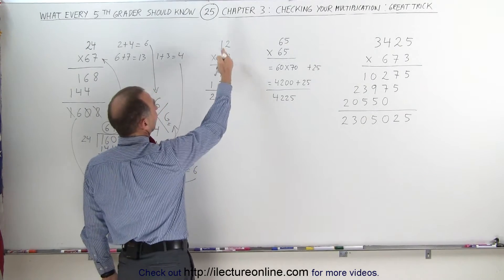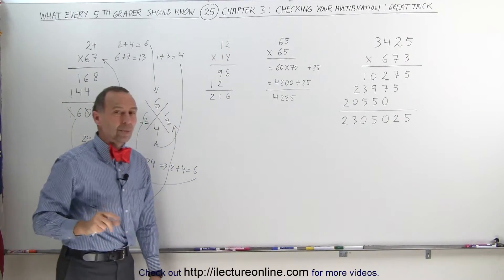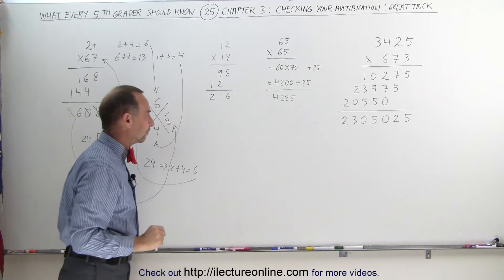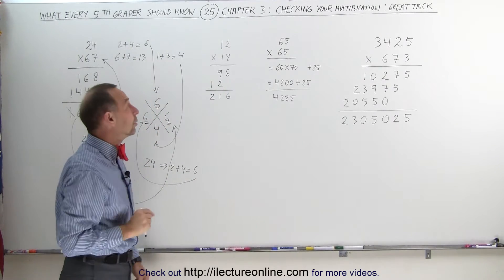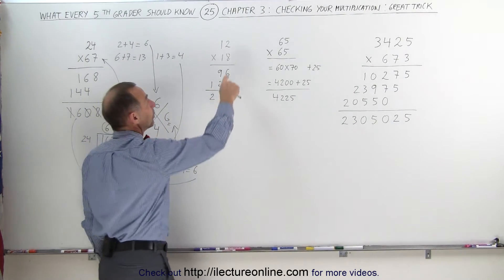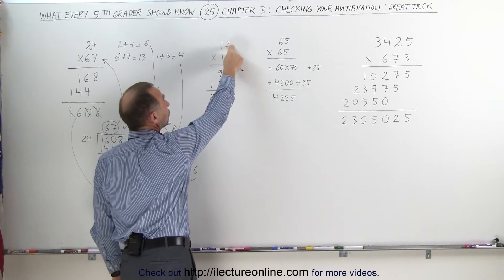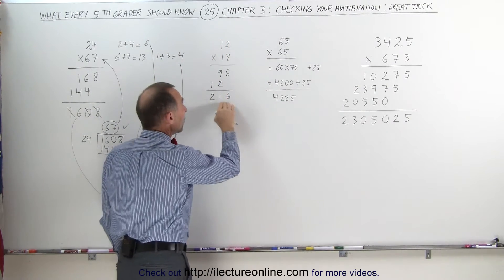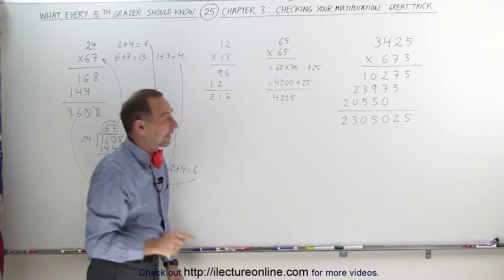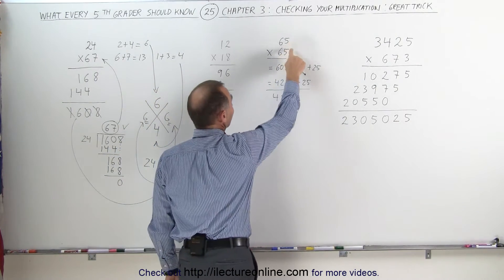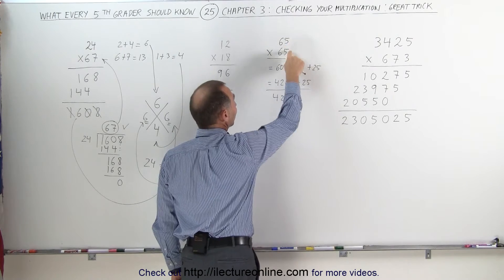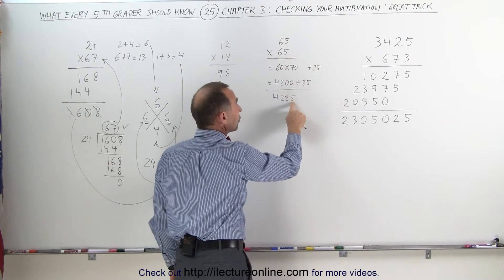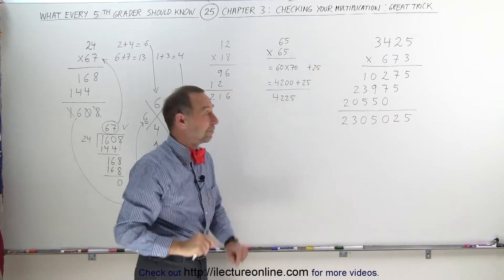So here, let's say we're multiplying 12 times 18, and we want to know if our answer 216 is correct. Well, one quick other way we can do is this. We can multiply the last two digits together, 2 times 8 is 16, that ends in a 6, your answer better end in a 6. Again, over here, you're multiplying 65 times 65, 5 times 5 is 25, which ends in a 5, your answer better end in a 5, or it's definitely not correct.